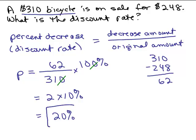The discount rate is 20%. So this was a 20% off sale and now let's just check it. What is 20% of 310? Well, it's 0.2 times 310 which is $62 which is how much it was decreased by. We took the 310 minus 62, we get the 248.